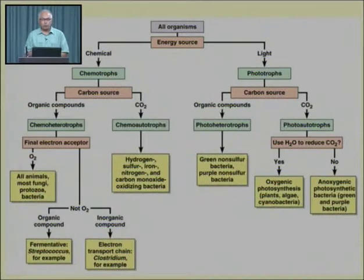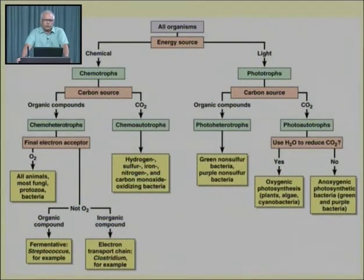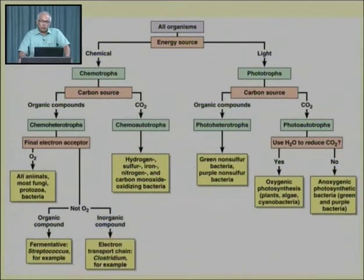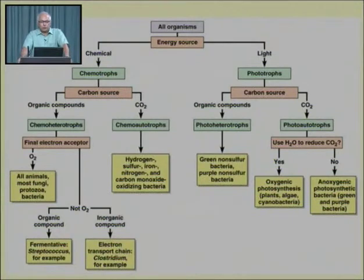Now let us see the classification of phototrophic organisms. Just as chemotrophs are divided based on carbon source, phototrophs are also divided into two groups based on carbon source. Phototrophic organisms requiring light or sunlight as an energy source and organic compounds as a carbon source are known as photo-heterotrophs. Those requiring carbon dioxide as a carbon source are known as photo-autotrophs. So we have four groups: chemo-heterotrophs, chemo-autotrophs, photo-heterotrophs, and photo-autotrophs.